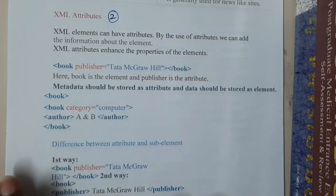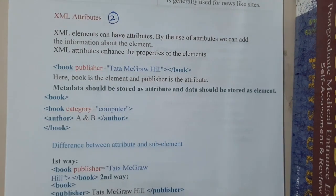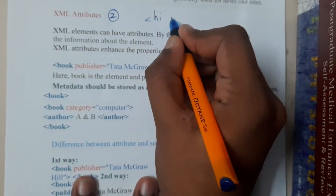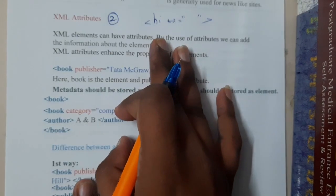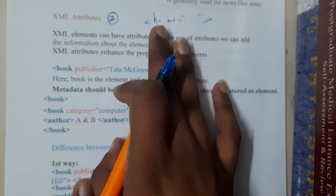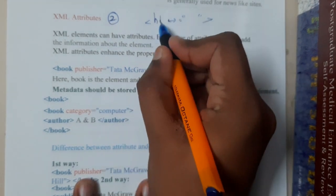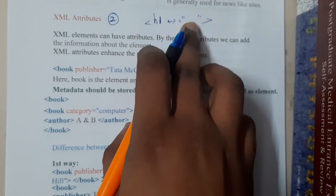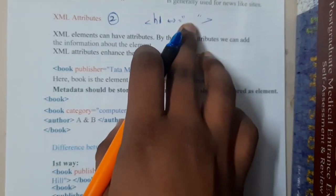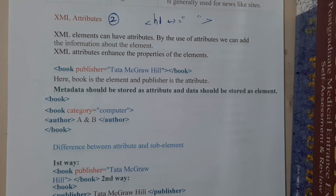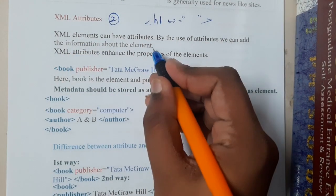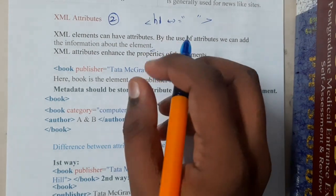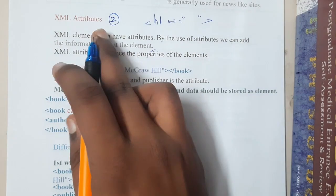XML attributes are similar to HTML attributes. In HTML, inside a tag we write an attribute equals to its value and then close the tag. Similarly in XML you can write user-defined attributes — both the tag and the value are user-defined. In XML, elements can have attributes, and by using attributes we can add more information about the element.